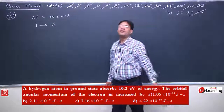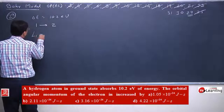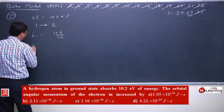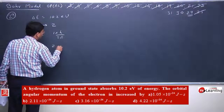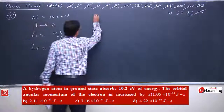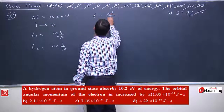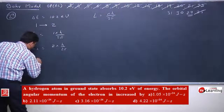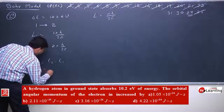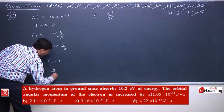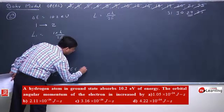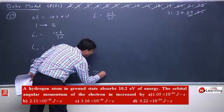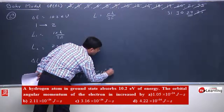The orbital angular momentum is increased. This is quite simple. Initial angular momentum L1 will be 1 × h/2π, and final angular momentum will be 2h/2π. Angular momentum is given by nh/2π. Hence, the change in angular momentum is L2 - L1, which equals h/2π. H is 6.6 × 10⁻³⁴, divided by 2π (3.14), which is roughly 10⁻³⁴.